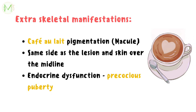Extraskeletally, we can appreciate café-au-lait pigmentation, which means coffee with milk kind of pigmentation. It appears on the same side as that of the lesion and also over the skin of the midline. Also, endocrine dysfunction arises, which is primarily manifested as precocious puberty, and some other endocrine disturbances may include hyperthyroidism, adrenal disorders, hyperpituitarism, hypercalcemia, and diabetes.